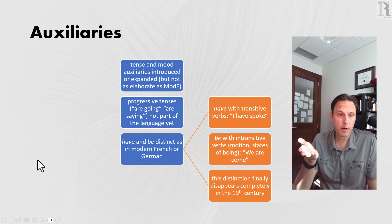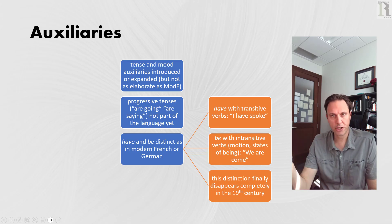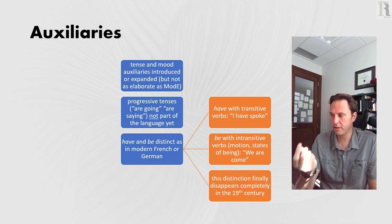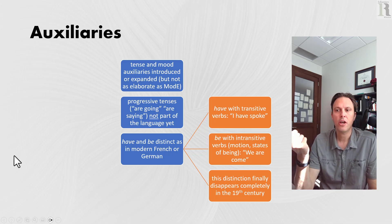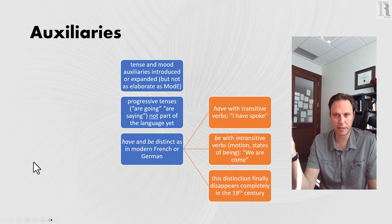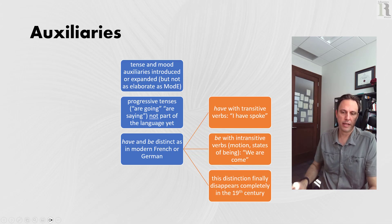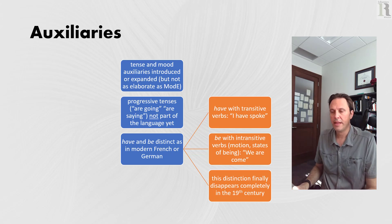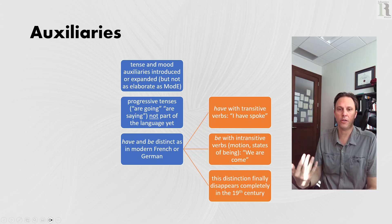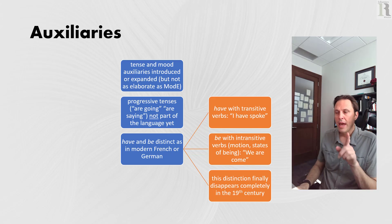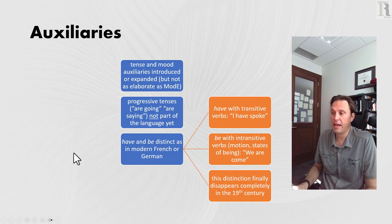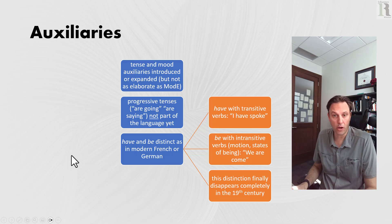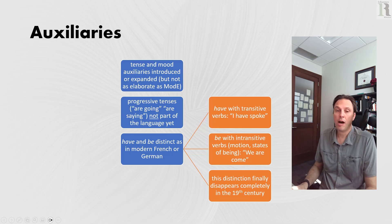Shakespeare plays with this ambiguity because the language was transitioning. When Prince Hal says to his father Henry IV 'I will,' that 'will' is ambiguous between 'I want to' and the future tense 'I will.' In early modern English, progressive tenses don't exist yet — no 'I am going,' just 'I go.' Phrases like 'they are saying' are not part of the language yet.